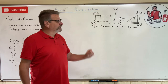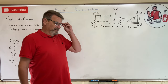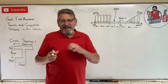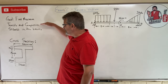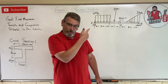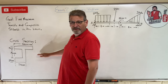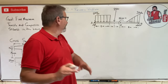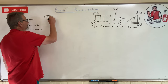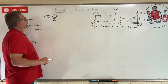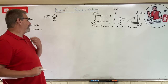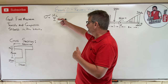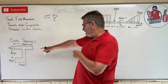Alright, it's time for test two review. If I was writing your test question, this is the perfect question. I ask you to find the maximum tensile and compressive stress in a beam with a load on it — and it has a funky cross section. We're talking about bending stress: MC over I. So let's start with the cross section and find I and c.